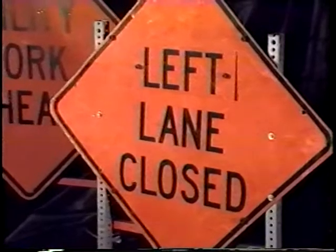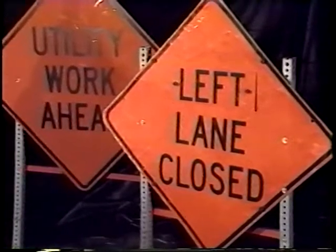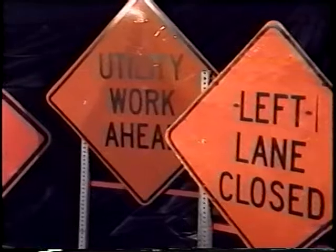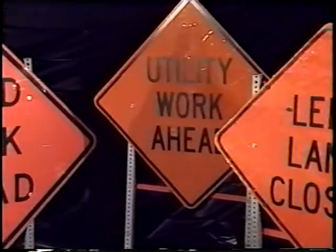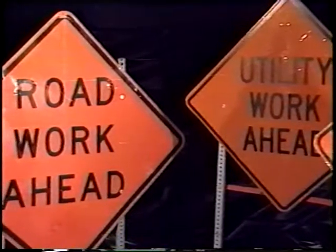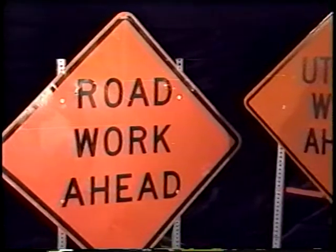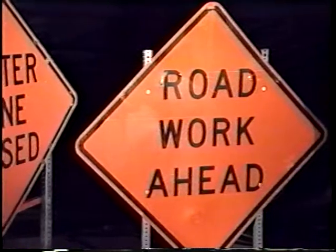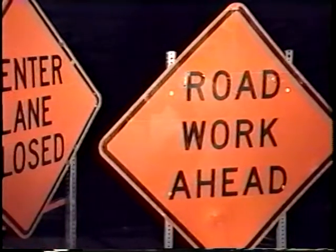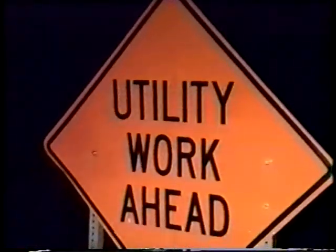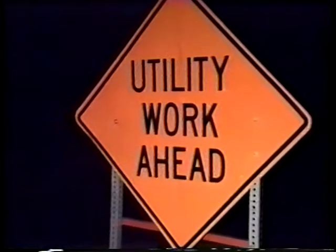Traffic control signs advise and warn drivers and tell them how to travel through the work site. They communicate these messages through words, colors, shapes, and symbols. For example, the color orange is used for construction or maintenance, and the diamond shape is used for warning signs. Signs that are used at night must be either reflectorized or illuminated so that the shapes and colors stay the same.